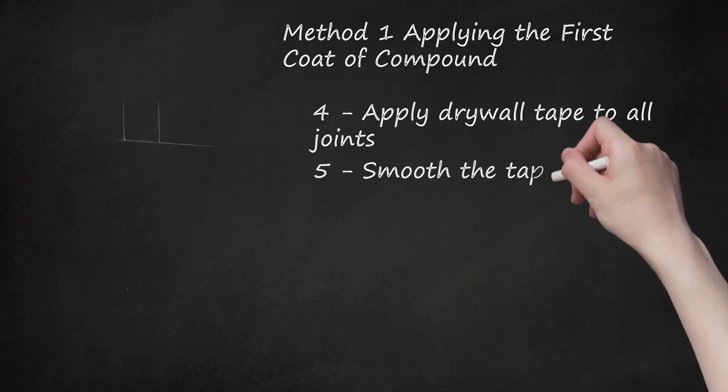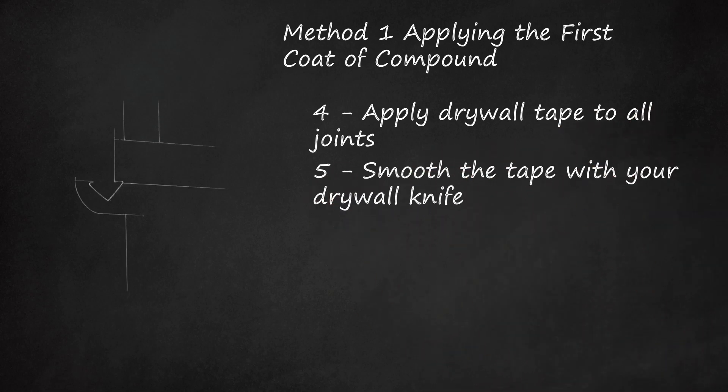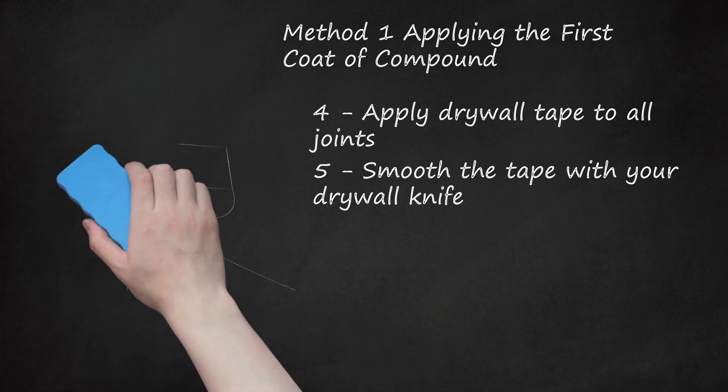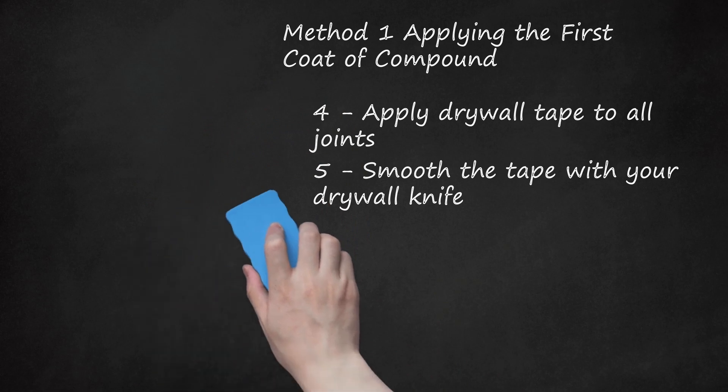Step 5: Smooth the Tape with Your Drywall Knife. Hold the 5-inch knife against the taped joint at a shallow angle. In one continuous motion, pull the knife across the joint, pressing the tape into the compound. Excess joint compound can be scraped off into the mud box.